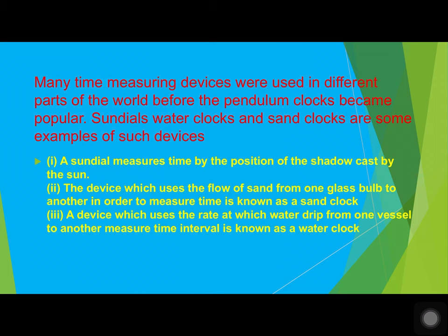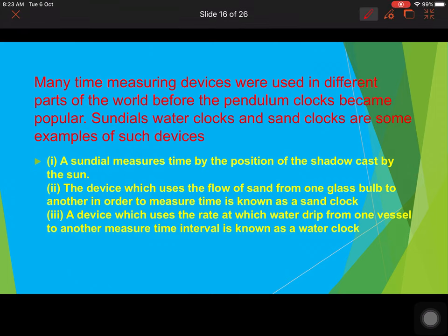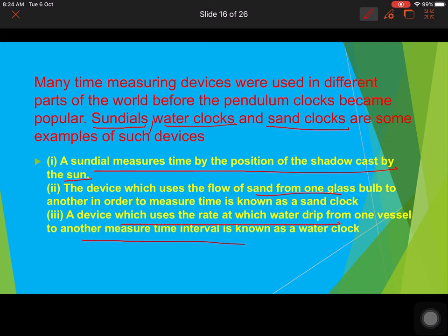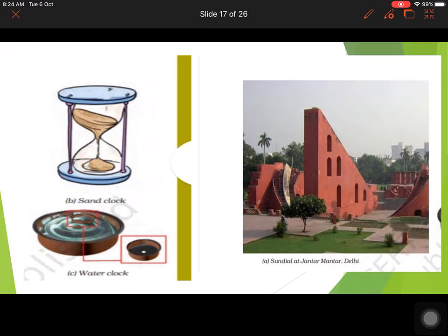Those early devices included sundials, water clocks, and sand clocks. A sundial measures time by the position of the shadow cast by the sun. A sand clock uses the flow of sand from one chamber to another. A water clock uses the rate at which water drips from one vessel to another. You can see pictures of these: the sundial, the water clock, and the sand clock.